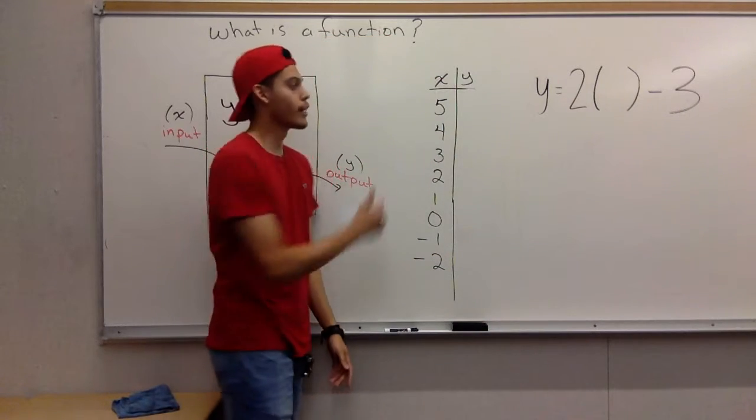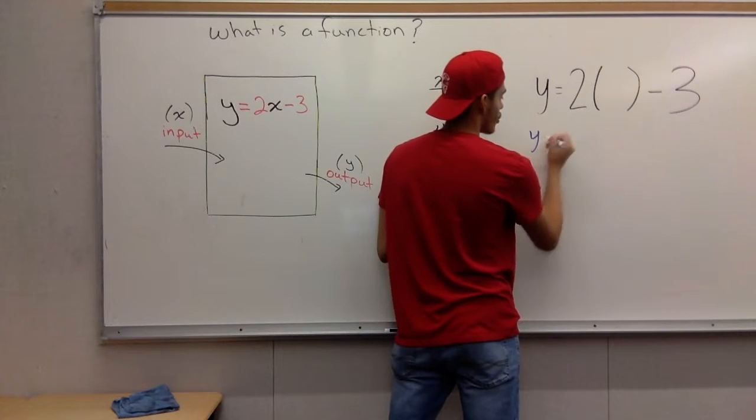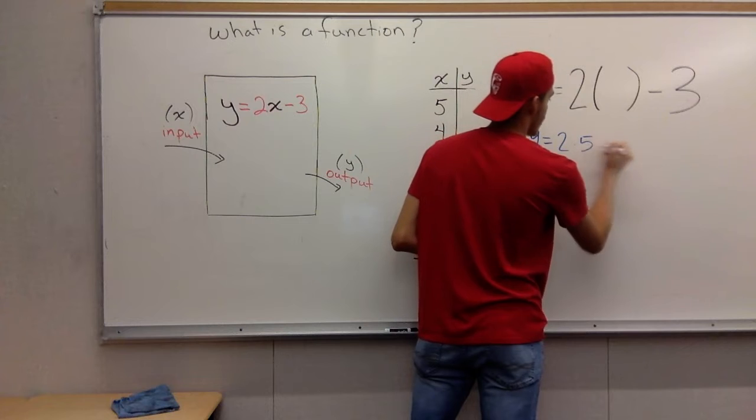So let's do the first one. We have a 5 right here. We have Y equals 2. You put the 5 in the empty spot. You have 2 times 5 minus 3.